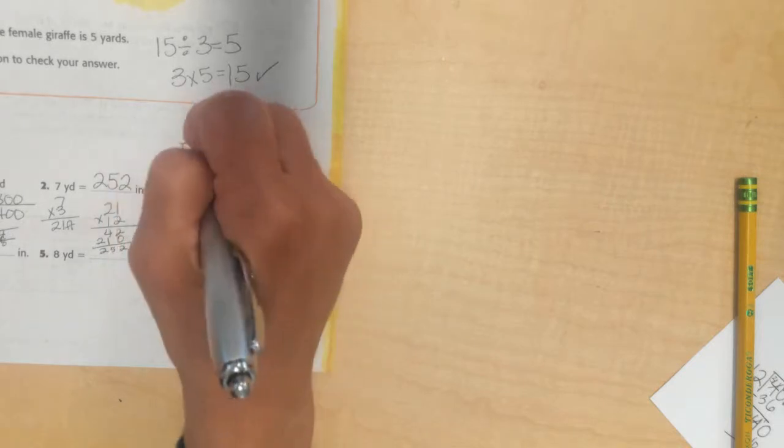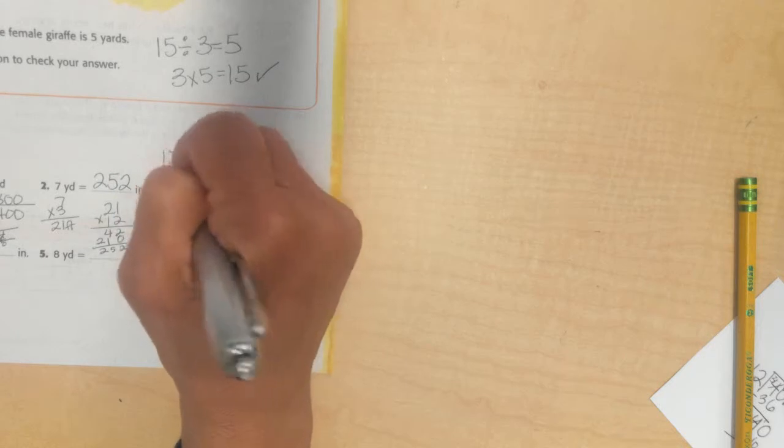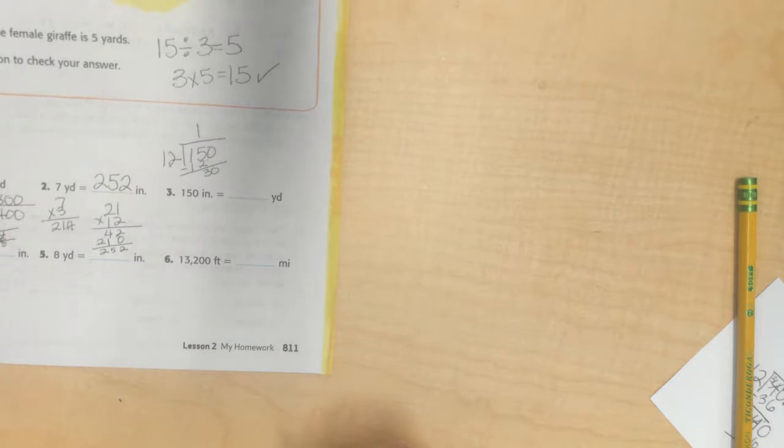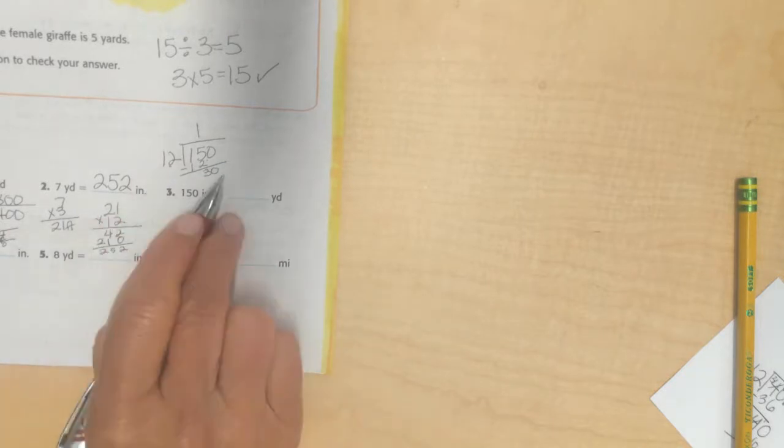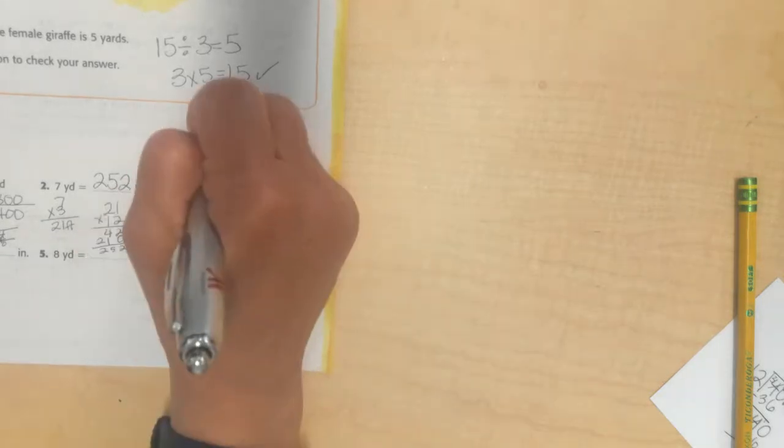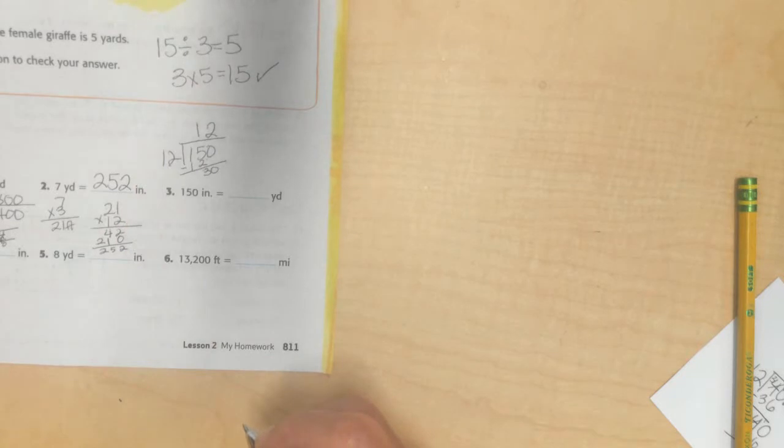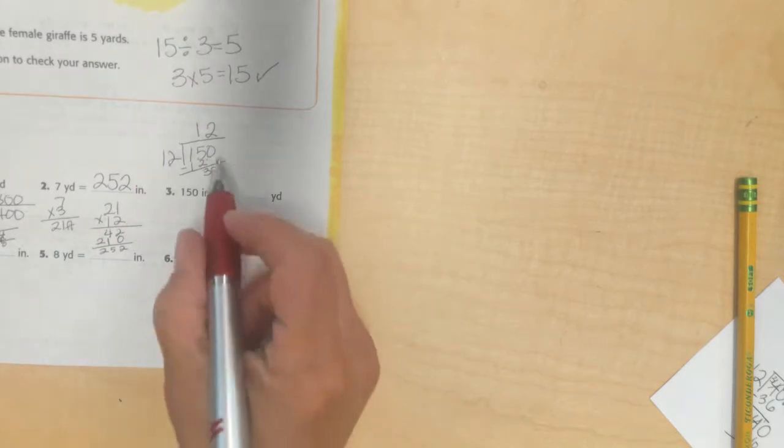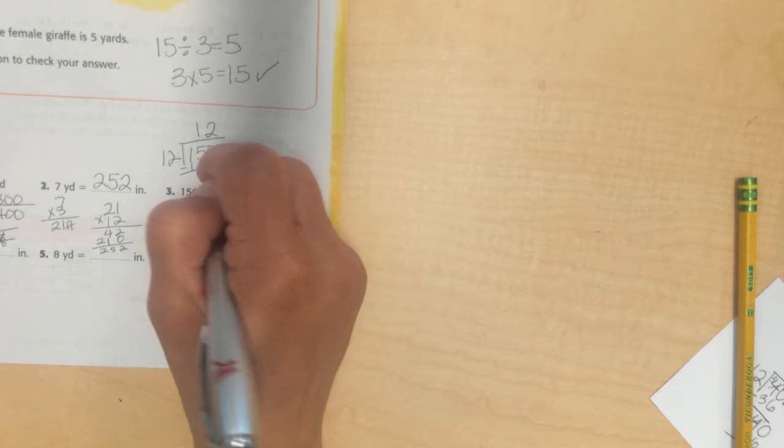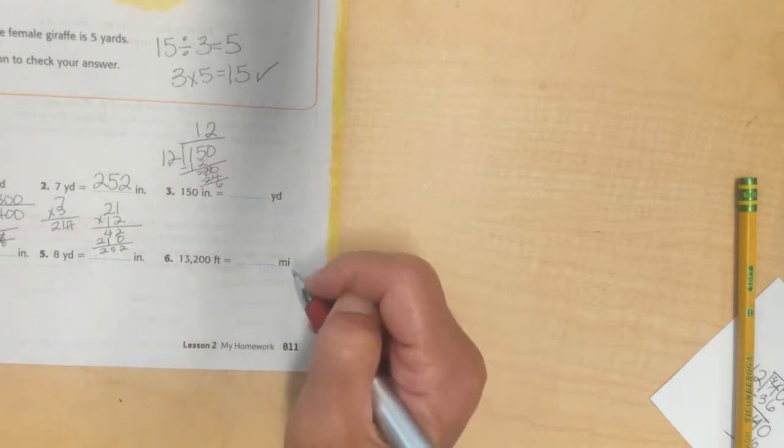12 goes into 1, no. 12 goes into 15, yes. One time. 1 times 12 is 12. I subtract. I have 3. I bring down my next number. It is a 0. So, I have to figure out how many 12's there are in 30. 2 times 12 would be 24. 3 times 12 would be 36. Too big. So, I'm going to say 2. Now, 2 times 2 is 4 and 2 times 1 is 2. I will subtract. I'll borrow from my 3, turn it into 2. 10 take away 4 is 6.